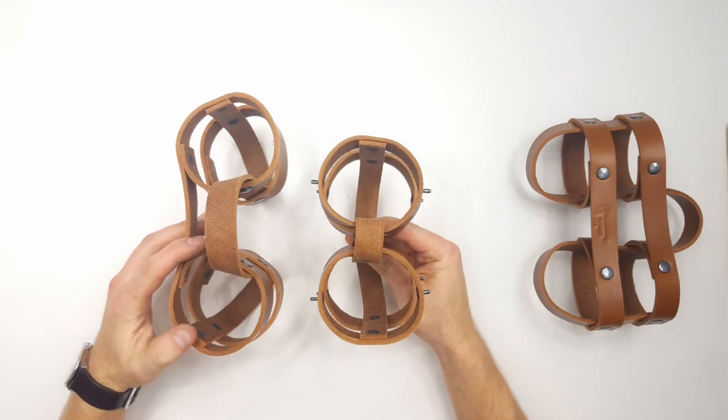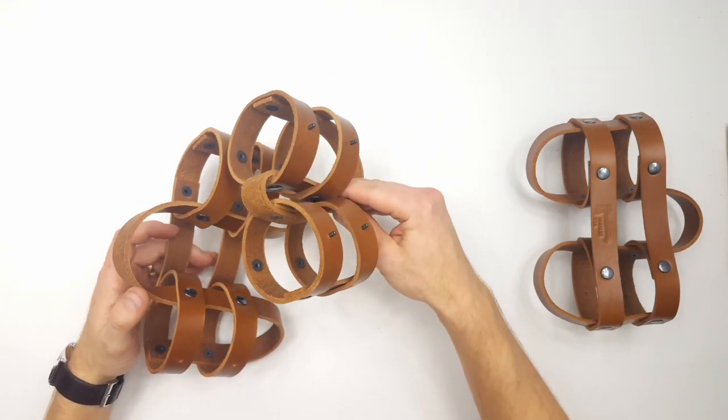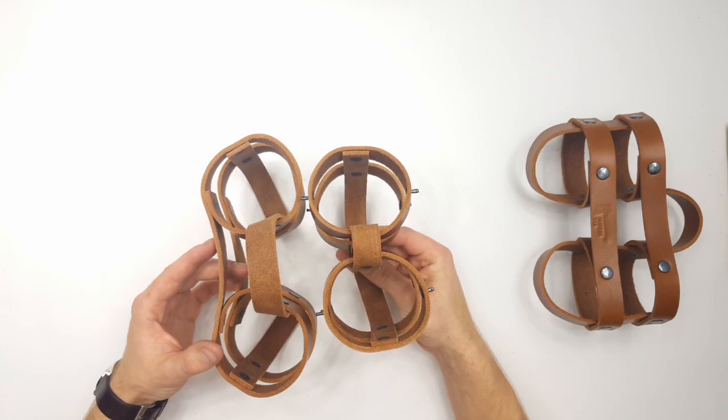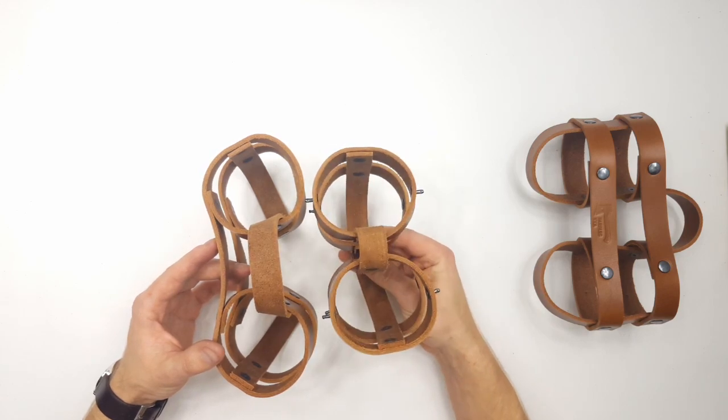And then just add on one side and push it through the holes like so. So, put on the end caps and then rivet it closed. Then we'll do the same on the other side.